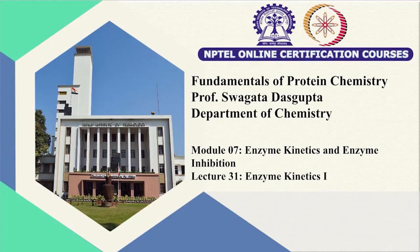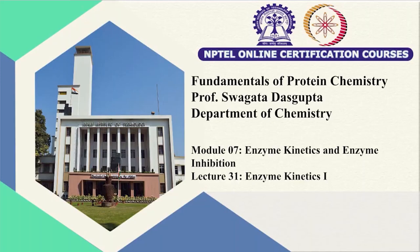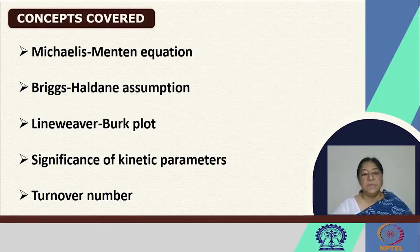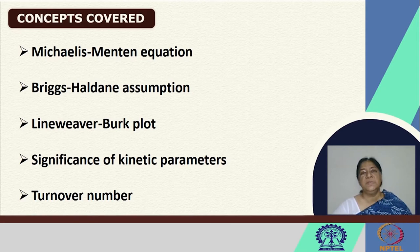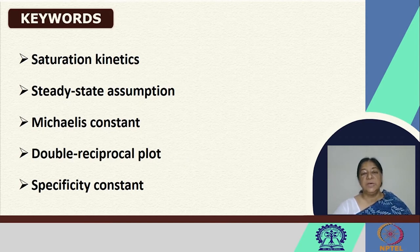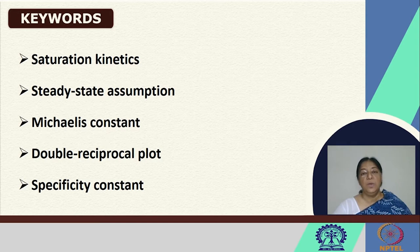We begin our discussion on enzyme kinetics in this module that follows enzymes and enzyme mechanisms. We will be looking at the Michaelis-Menten equation, Briggs-Haldane assumption, the Lineweaver-Burk plot, and the significance of these kinetic parameters, including the turnover number of an enzyme. These concepts are important in understanding saturation kinetics, specificity of substrates, how we can design specific inhibitors, and how we can compare inhibitors.